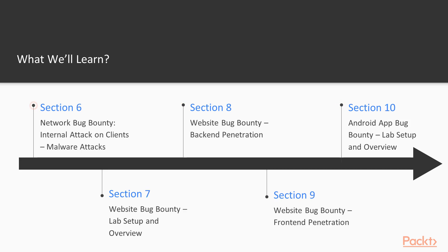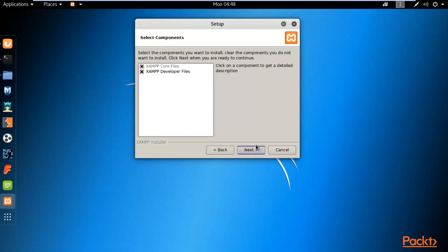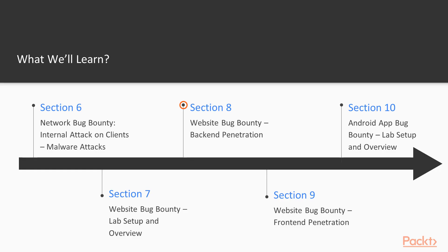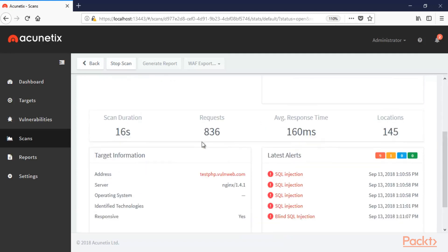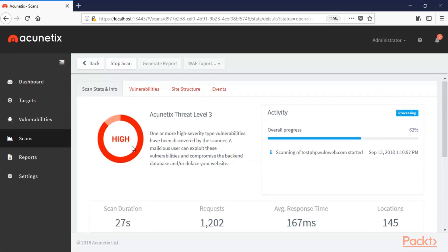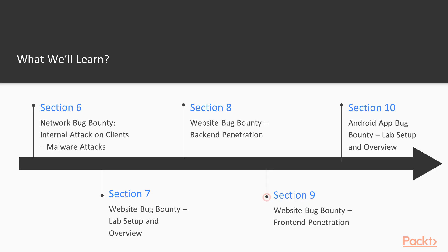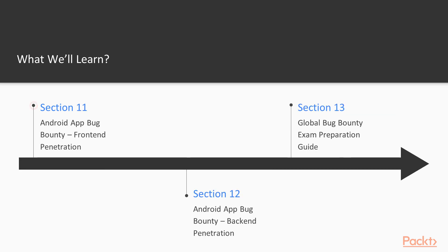Then we will learn how you can attack a client machine using malware. Then we will set up a lab for website bug bounty. Inside website bug bounty, we will learn backend and frontend penetration techniques. Then we will learn about Android lab setup, and inside Android app bug bounty we will cover frontend and backend penetration. Finally, we will end the course with the global bug bounty exam preparation guide.